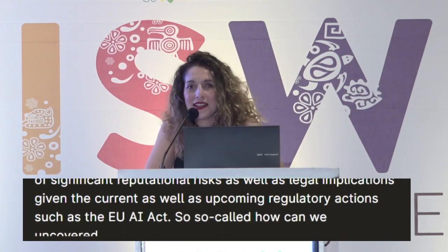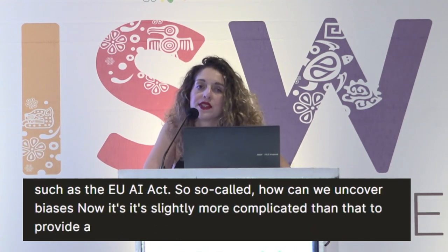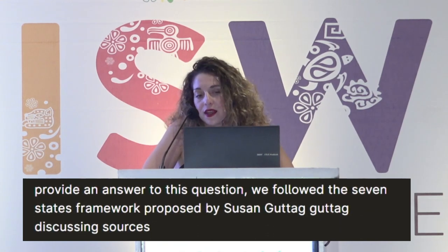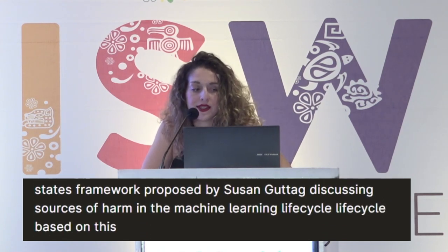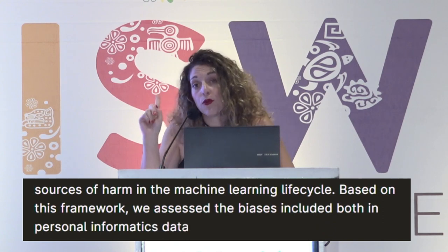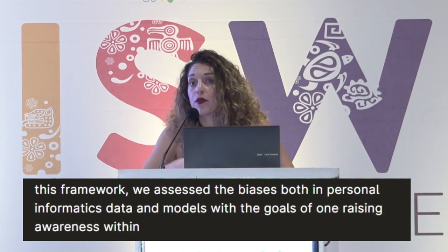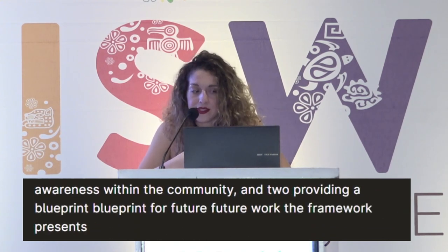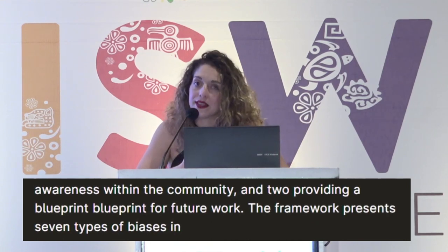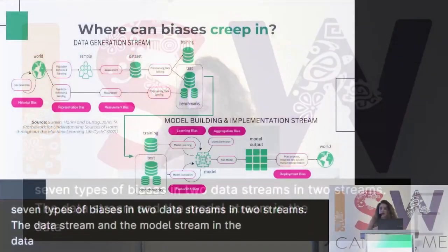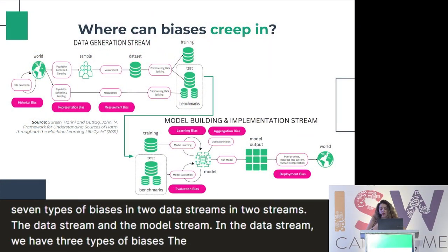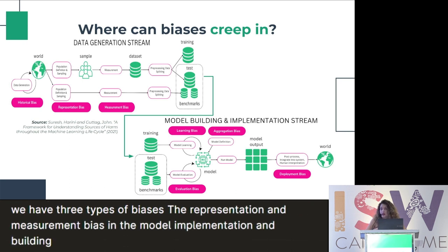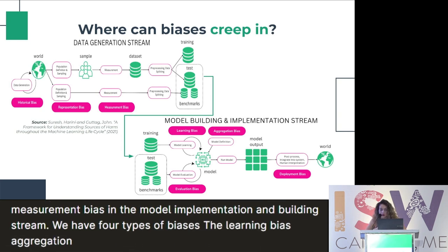How can we uncover biases? To answer this question, we followed the seven-stage framework proposed by Suresh and Guttag, discussing sources of harm in the machine learning life cycle. Based on this framework, we assessed biases included in both personal informatics data and models. The framework presents seven types of biases in two streams: the data stream and the model stream. In the data stream, we have three types: historical, representation, and measurement bias. In the model implementation and building stream, we have four types: learning bias, aggregation bias, deployment bias, and evaluation bias.